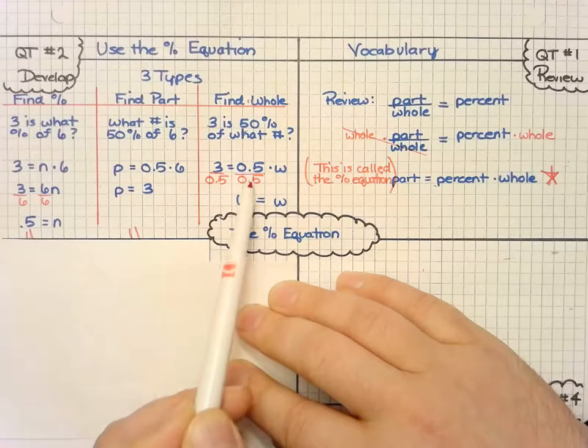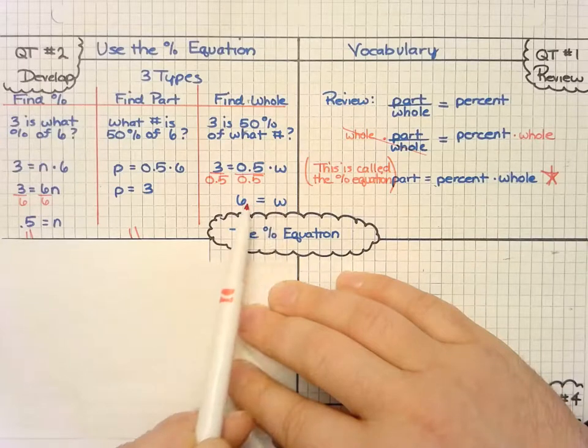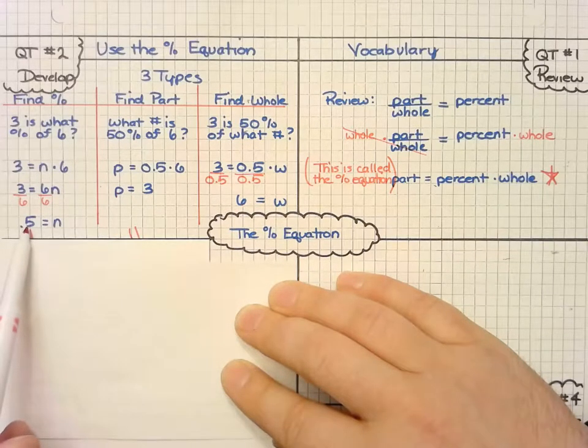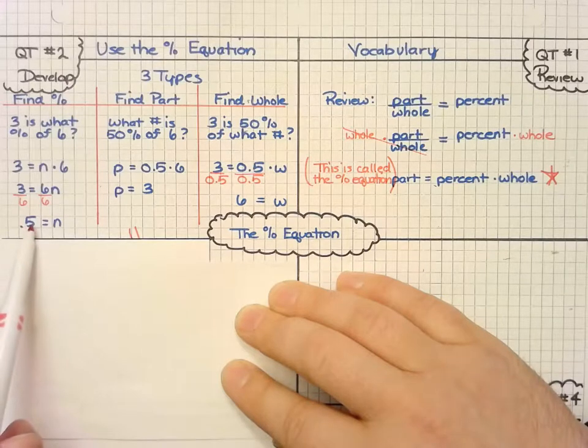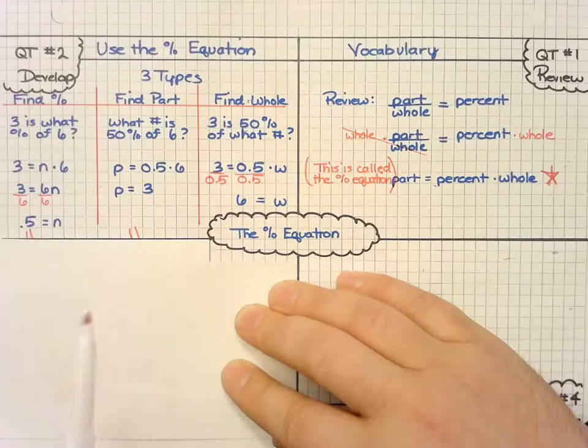And so when I do my simplification, I get my answers: the whole number is six, the partial number is three, and my percentage is 0.5. Notice that these are all the same problem, just looking for the different parts.